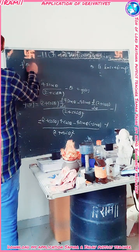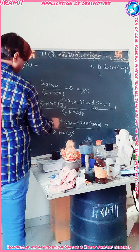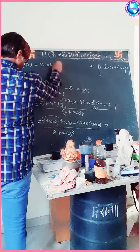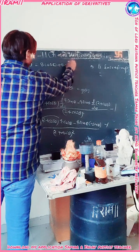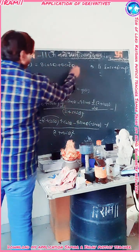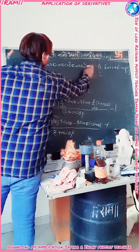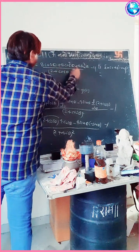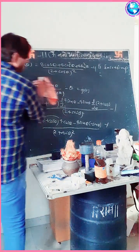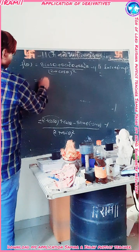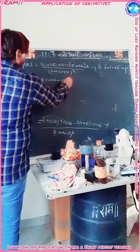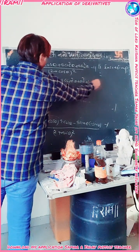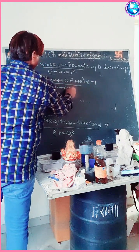Expanding the numerator: f'(θ) = (2+cosθ)·4cosθ − 4sinθ·(−sinθ), divided by (2+cosθ)². This gives 8cosθ + 4cos²θ + 4sin²θ, minus (2+cosθ), all divided by (2+cosθ)². Taking 4 as common from the trigonometric terms: 8cosθ + 4(cos²θ + sin²θ) − 1, over (2+cosθ)².